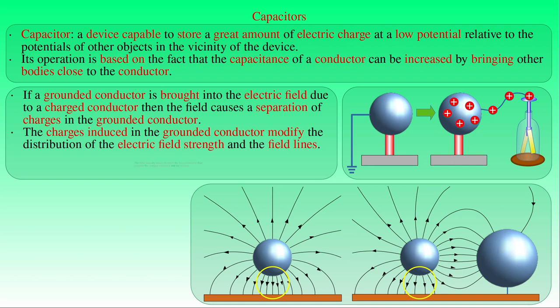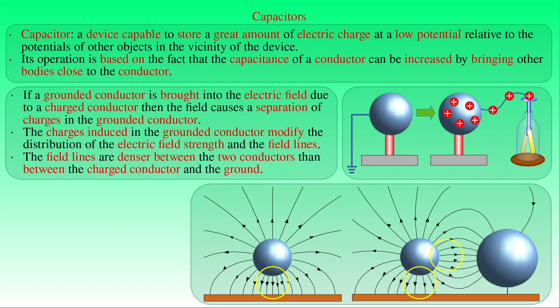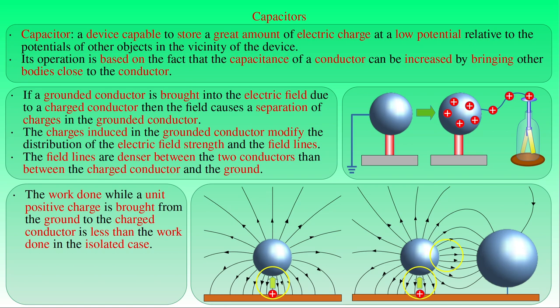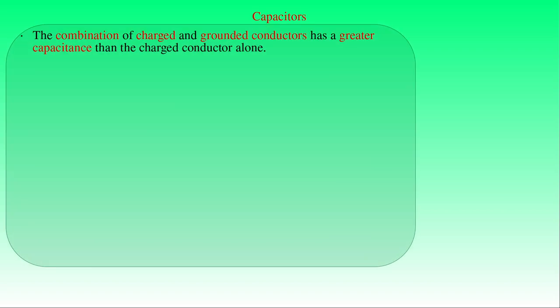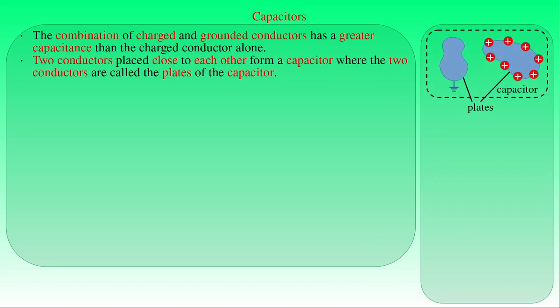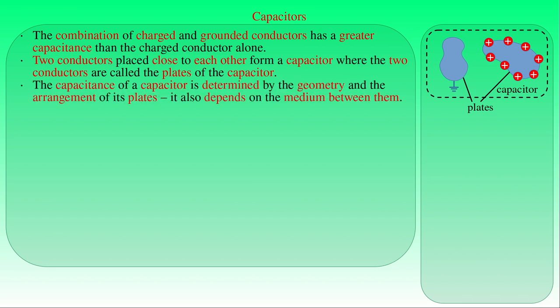It can be demonstrated by measuring the electric field around the charged conductor that the field lines are denser over its surface close to the grounded conductor than between other parts of its surface and the ground. As a result, the work done while a unit positive charge is brought from the ground to the charged conductor will be less than the work done when the charged conductor is isolated or far from the grounded one. In other words, the electric potential of a charged conductor can be reduced by bringing a grounded conductor close to it. This is why the combination of charged and grounded conductors has a greater capacitance than a charged conductor alone. Two conductors placed close to each other therefore form a capacitor, where the two conductors are called the plates of the capacitor. The capacitance of a capacitor is determined by the geometry and the arrangement of its plates.